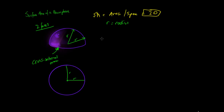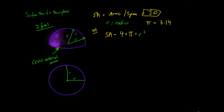For this shape we have half of a sphere. The surface area of a full sphere is equal to 4 multiplied by pi multiplied by the radius squared, where pi is the mathematical constant approximately equal to 3.14. Since we only have half of the sphere, we've cut away the bottom half, so we need to halve this amount.